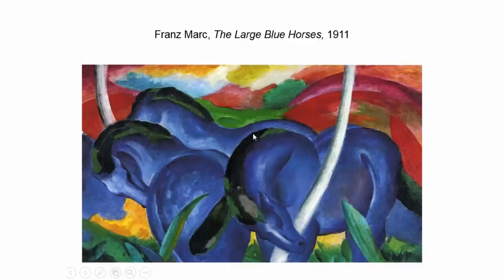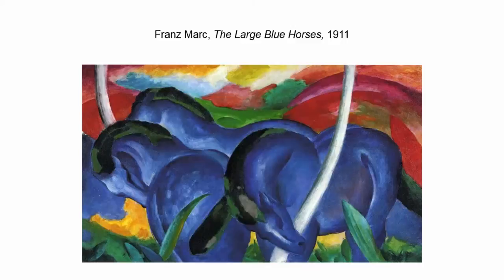Franz Marc's The Large Blue Horses — Marc was a founding member of the Blaue Reiter, a group of artists consisting of German and Russian expats living in Germany. He painted using often primary colours: he attributed masculinity and spirituality to blue, violence and base matter to red, and yellow symbolised feminine joy. He used animals more often than people because they have a more pantheistic connection to nature and are therefore more pure in depicting universal matter.